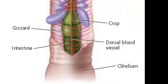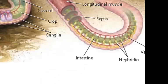Segmented worms have a circulatory system. It is a closed system with muscular blood vessels and aortic arches that pump blood. This circulatory system takes in oxygen and gives off carbon dioxide, which occurs through the skin. The circulatory system contains five hearts that pump blood throughout the body.